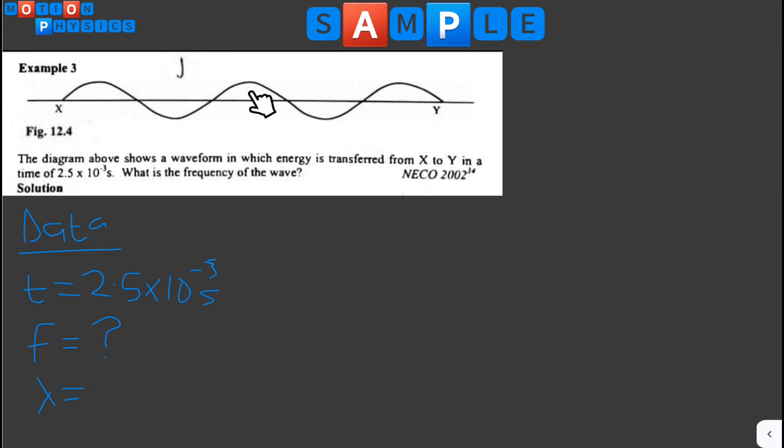This up loop and down loop means another wavelength, then this half. So let's count: one, two, and 2.5. So I'm going to write the wavelength as 2.5.